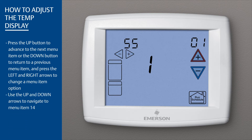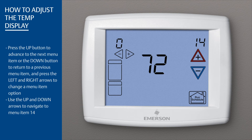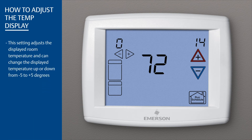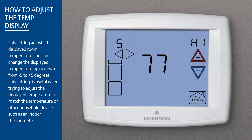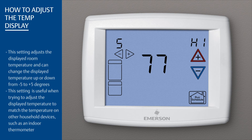Use the up and down arrows to navigate to menu item 14. This setting adjusts the displayed room temperature and can change the displayed temperature up or down from minus five to plus five degrees. This setting is useful when trying to adjust the displayed temperature to match the temperature on other household devices, such as an indoor thermometer.